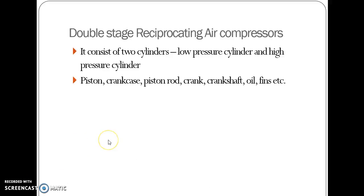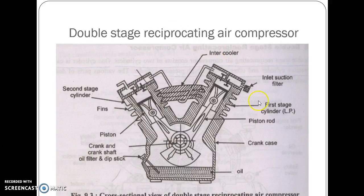The next type is the double stage reciprocating air compressor. It consists of two cylinders: a low pressure cylinder and a high pressure cylinder, along with pistons, crankcase, piston rod, crank, crankshaft, oil, and fins. The schematic diagram shows the low pressure cylinder and high pressure cylinder interconnected with intercoolers. Both cylinders have pistons and fins for the cooling system, and oil is used for lubrication. The piston rods of both cylinders are connected to a single crankcase and crankshaft.